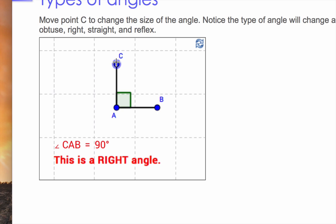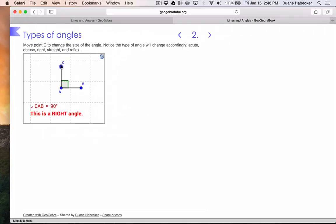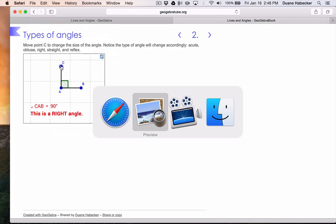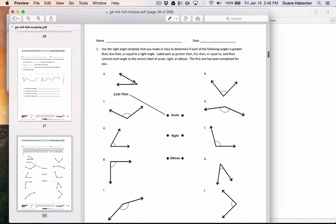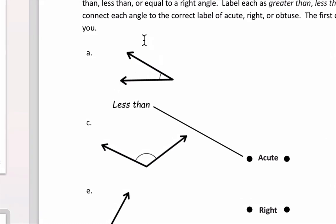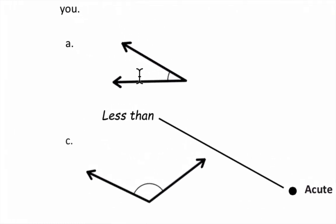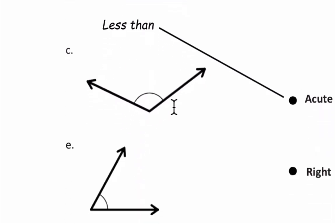Let's identify these angles. This angle, is it acute or obtuse? Well, it's acute, which means it is less than 90 degrees. How about this angle right here? Well, it's obtuse because it is greater than 90 degrees.